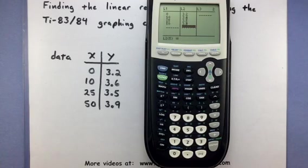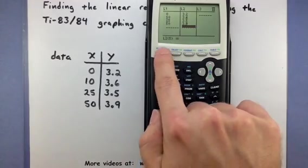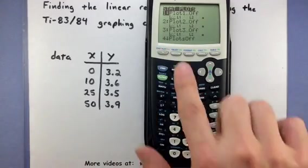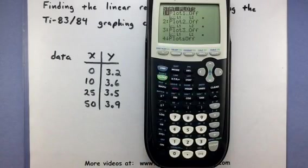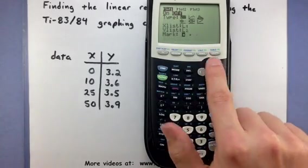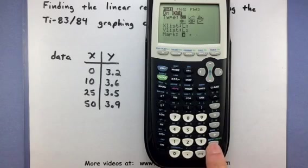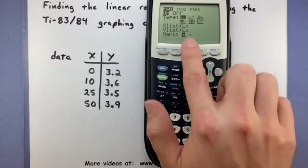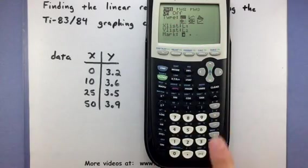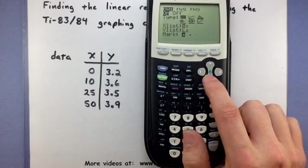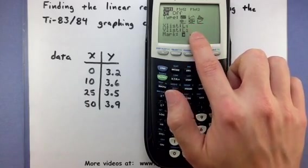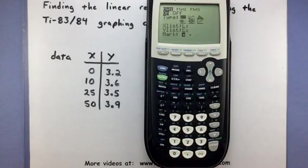Now if you want to see what this data looks like, let's go ahead and set up our scatter plot by going to 2nd, STATPLOT. Hopefully the first option is selected that says PLOT 1. Press ENTER, then press ENTER one more time to turn it on. We'll make sure that it is set to SCATTERPLOT and that it is pulling the data from list 1 and list 2. Alright, that looks good.